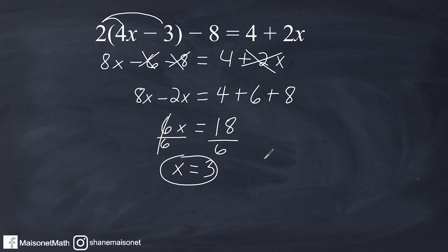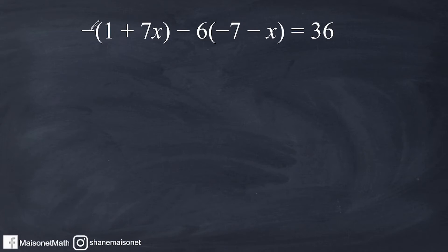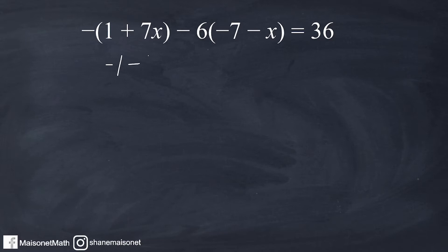Let's go ahead and do a second example. Now with this equation, notice that we have a lot of negatives involved, and the most common mistake I see with students is they fail to apply the integer rules correctly. If we take a look at this negative on the outside of this set of parentheses, the rule is if you have just one negative on the outside, you've got to consider that a negative 1 — so it's like you're taking negative 1 and multiplying it by each term inside the parentheses. The shortcut is you just take everything inside the parentheses and write it exactly opposite. So instead of positive 1, you write negative 1, and instead of positive 7x, you write negative 7x.